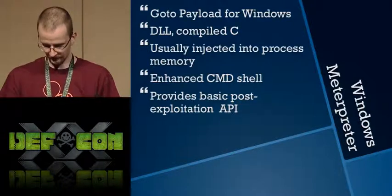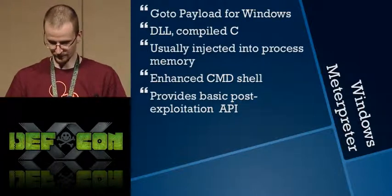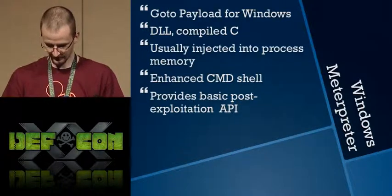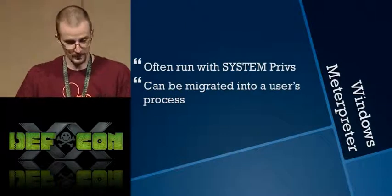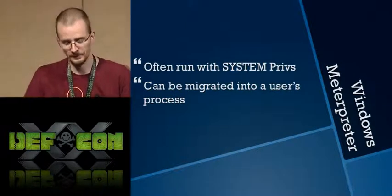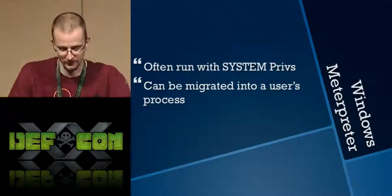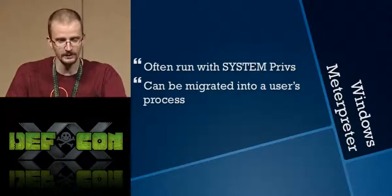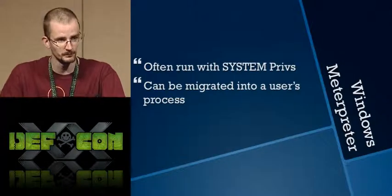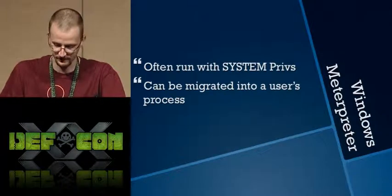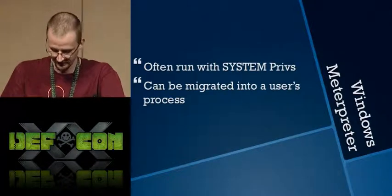For those who don't know what Meterpreter is, it is the default go-to payload for Metasploit. It is a compiled C DLL that most of our exploits inject into memory via stager. It provides an enhanced command shell, but what's really important is that it provides a standard API that module developers can code to. One of the benefits of Meterpreter is that we can migrate — once we've gotten that initial shell, we can migrate it into other processes and gain system-level access very quickly and easily.